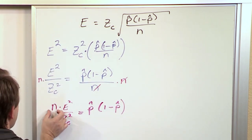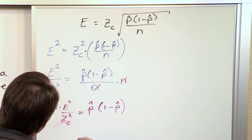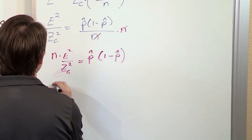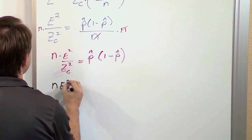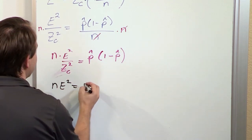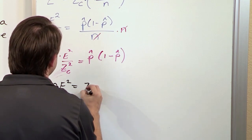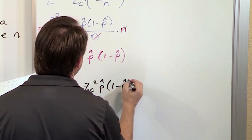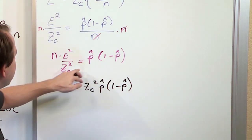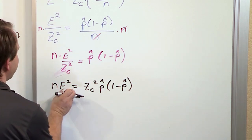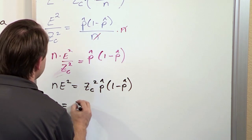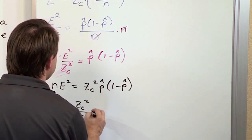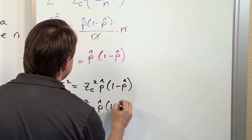Now we're almost done. We want n by itself. So we're going to multiply both sides by z_c². We'll have nE². It disappears on the left. On the right, it's going to be z_c² p̂(1-p̂). So we just multiply the left and right by z_c². Now finally, we divide by E². So we have n equals z_c²/E² times p̂(1-p̂).